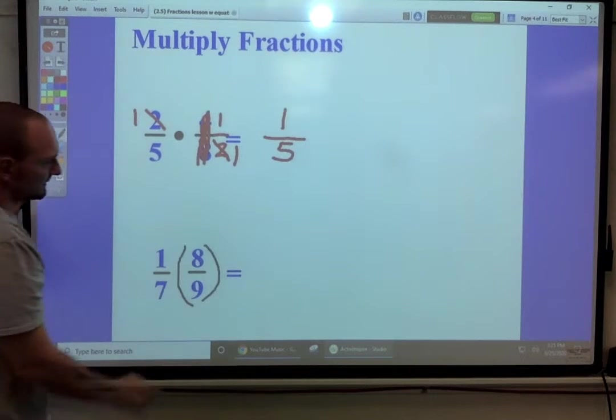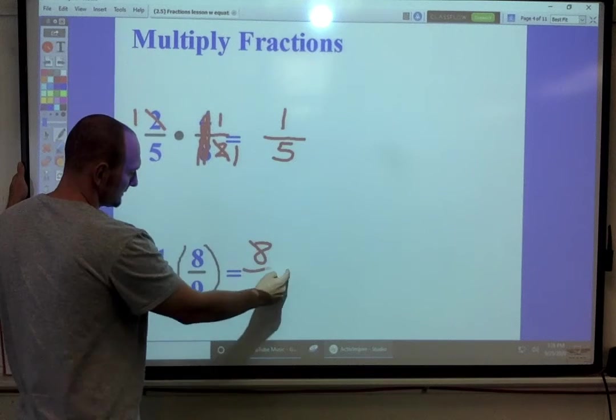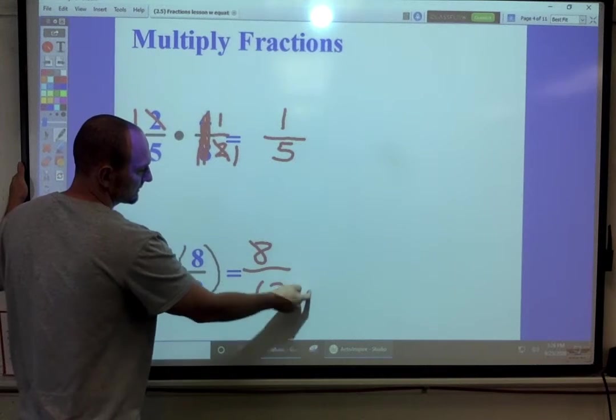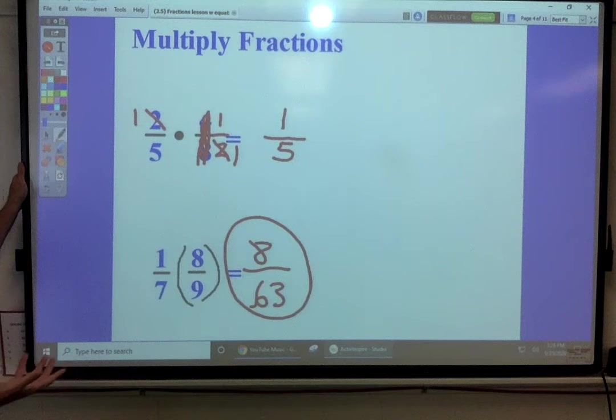None of these are going to simplify. So we're just going to go straight across. Eight sixty-thirds. And that's multiplying fractions.